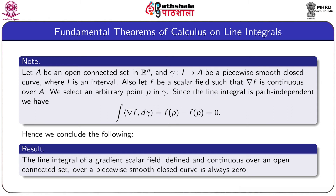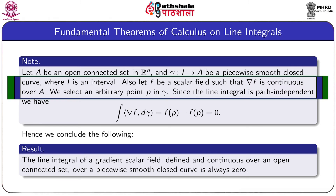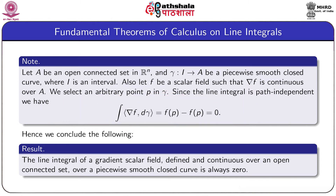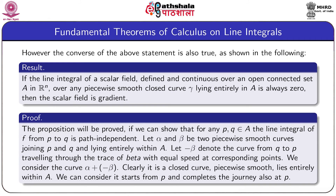Note: let A be an open connected set in R^n and gamma from an interval I to A be a piecewise smooth closed curve. Also let F be a scalar field such that grad F is continuous over A. We select an arbitrary point P lying on gamma. Since the line integral is path independent, we have the integral over gamma of grad F d-gamma equals F(P) minus F(P), which equals 0. Hence we conclude: the line integral of a gradient scalar field, defined and continuous over an open connected set, over a piecewise smooth closed curve gamma lying entirely in A, is always 0.